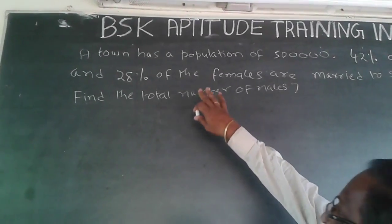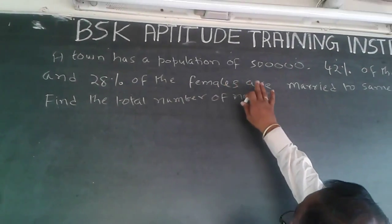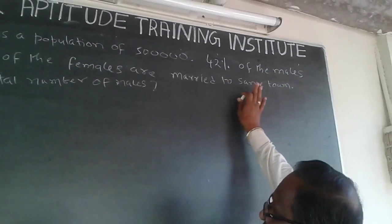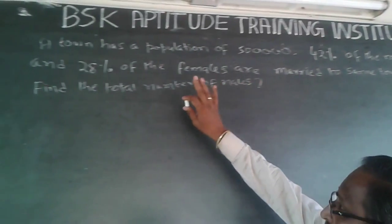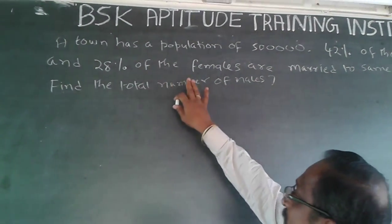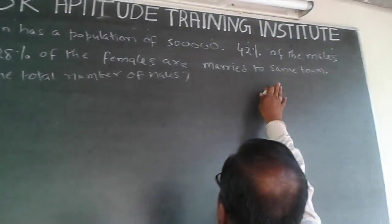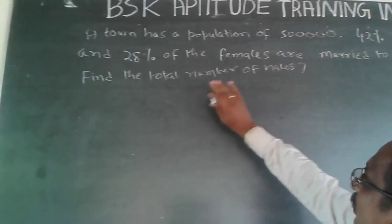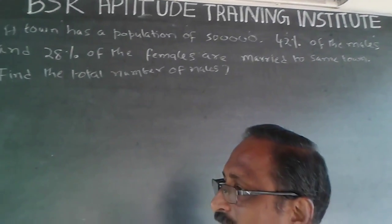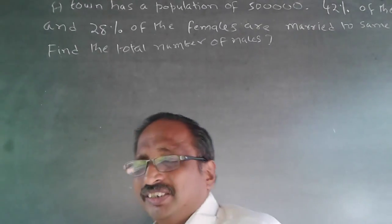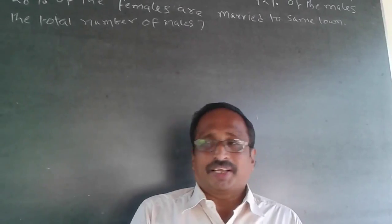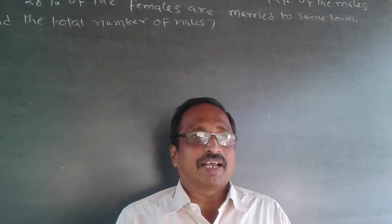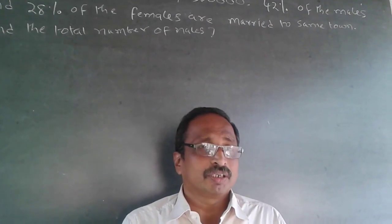The question is: a town has a population of 5 lakhs, 42% of the males and 28% of the females are married to the same town. Find the total number of males. This is more of a logical reasoning problem, though it can also be classified as a percentage problem.